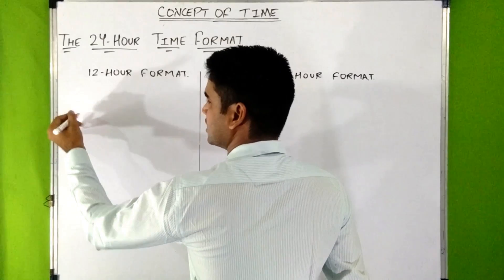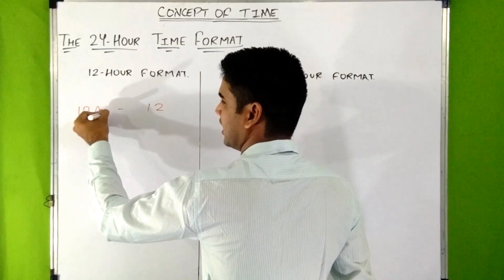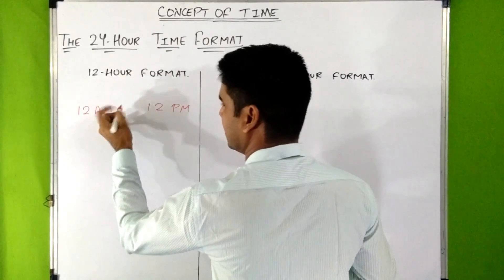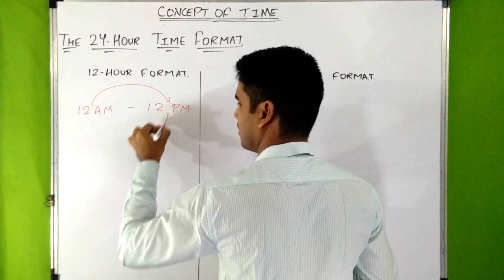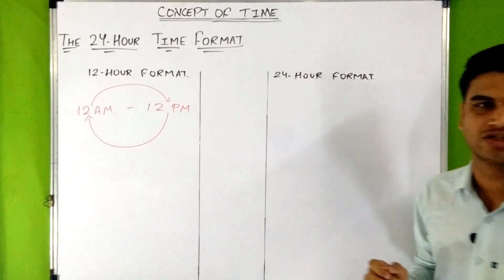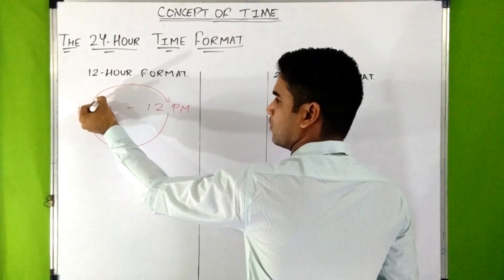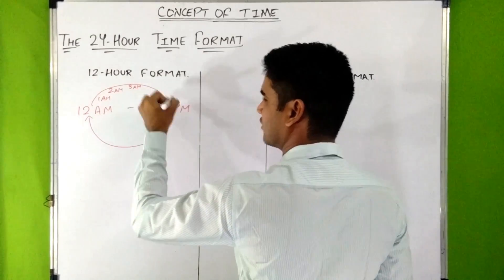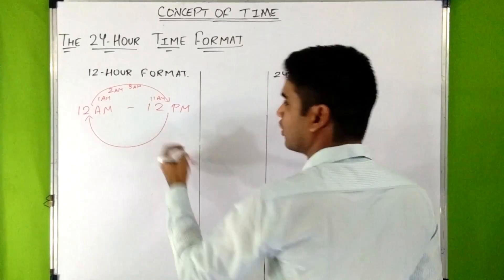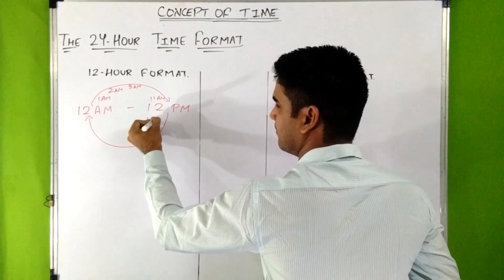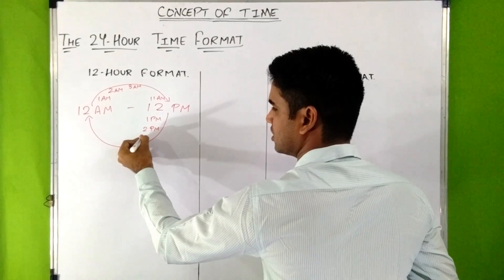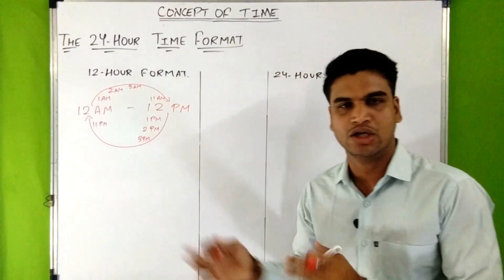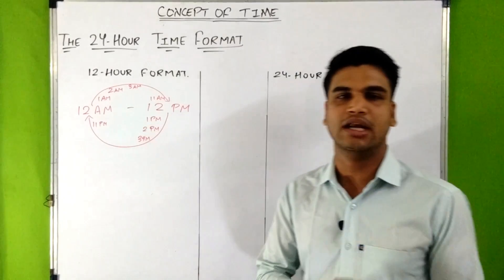In the 12-hour time format, the day goes from 12 AM to 12 PM, and then from 12 PM back to 12 AM — completing 24 hours. After 12 AM we have 1 AM, 2 AM, 3 AM, and so on up to 11 AM, then 12 PM (noon). After 12 PM we have 1 PM, 2 PM, and so on up to 11 PM, and then 12 AM again where the old day ends and a new day starts.